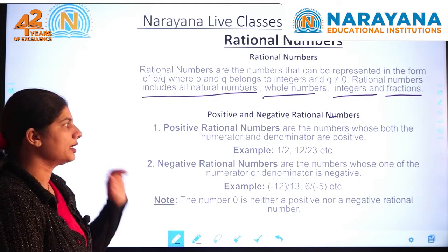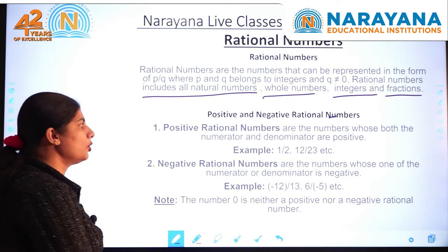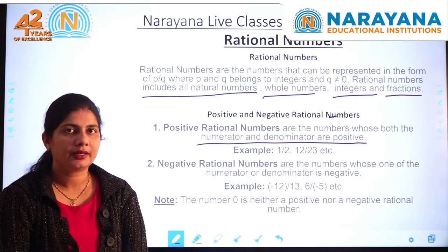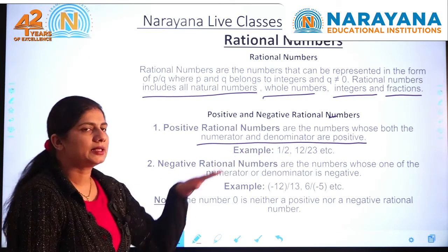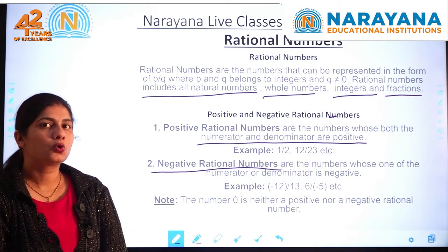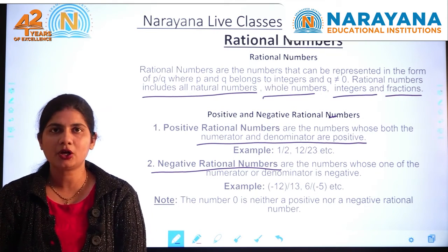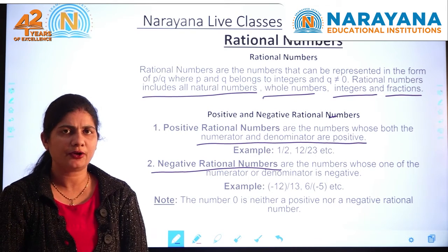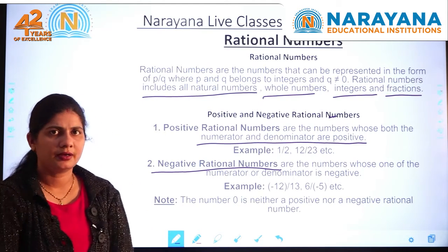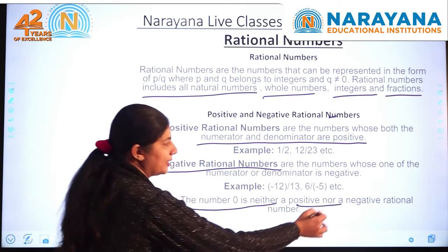Next is positive and negative rational numbers. Positive rational numbers are the rational numbers whose both numerator and denominator are positive — these are known as positive rational numbers. Negative rational numbers are the numbers where one of the numerator or denominator is negative. If one of the numerator or denominator is negative, then the rational number is known as a negative rational number.